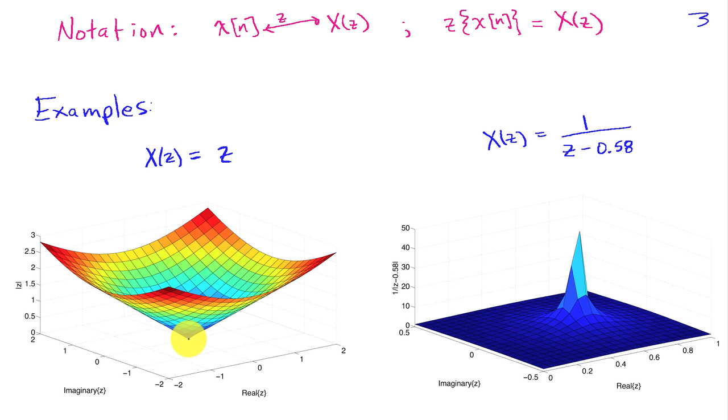The further we get away from the origin, the taller the value of Z becomes, and we end up with these circular cross-sections, if you were to slice through it.